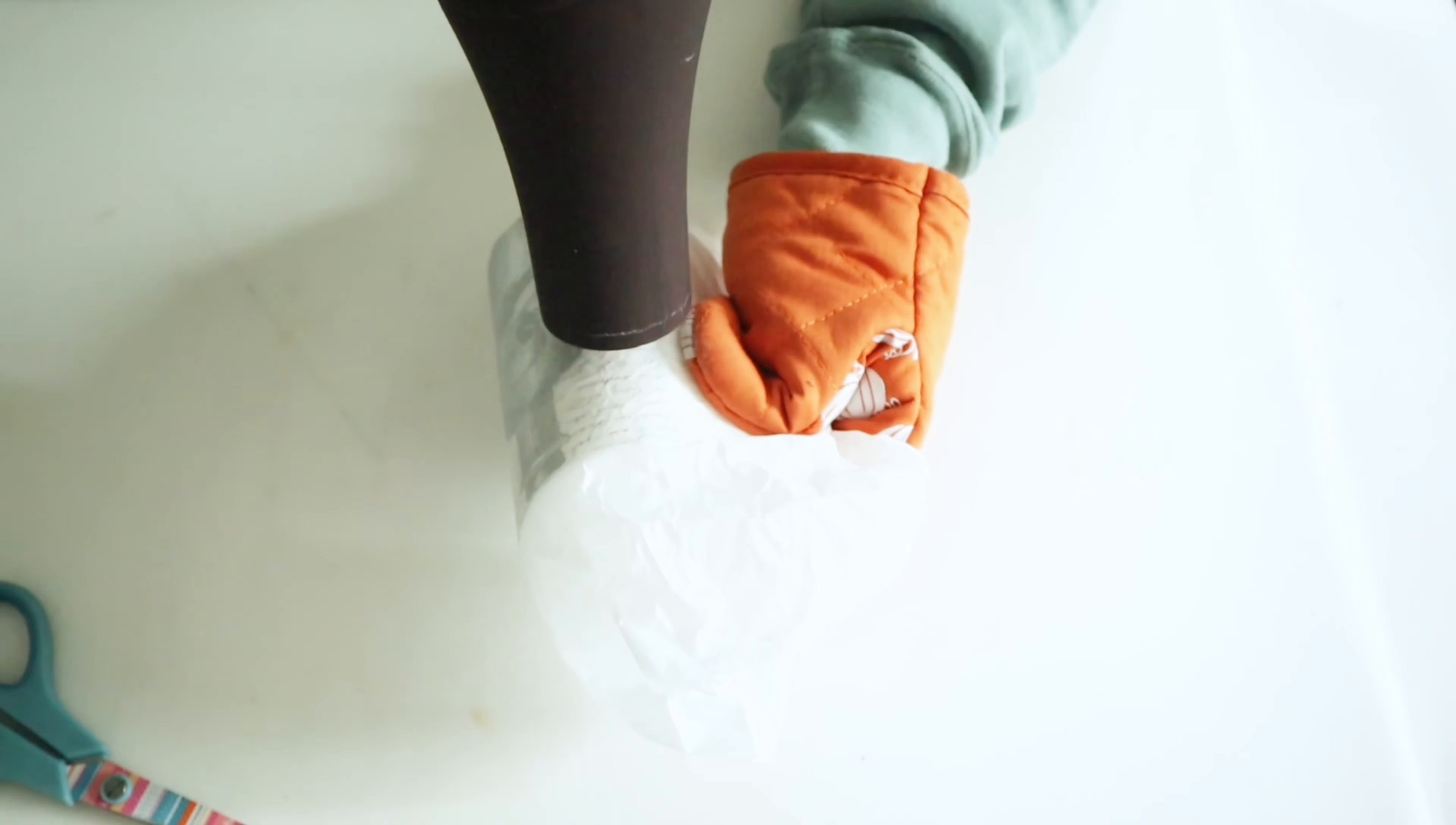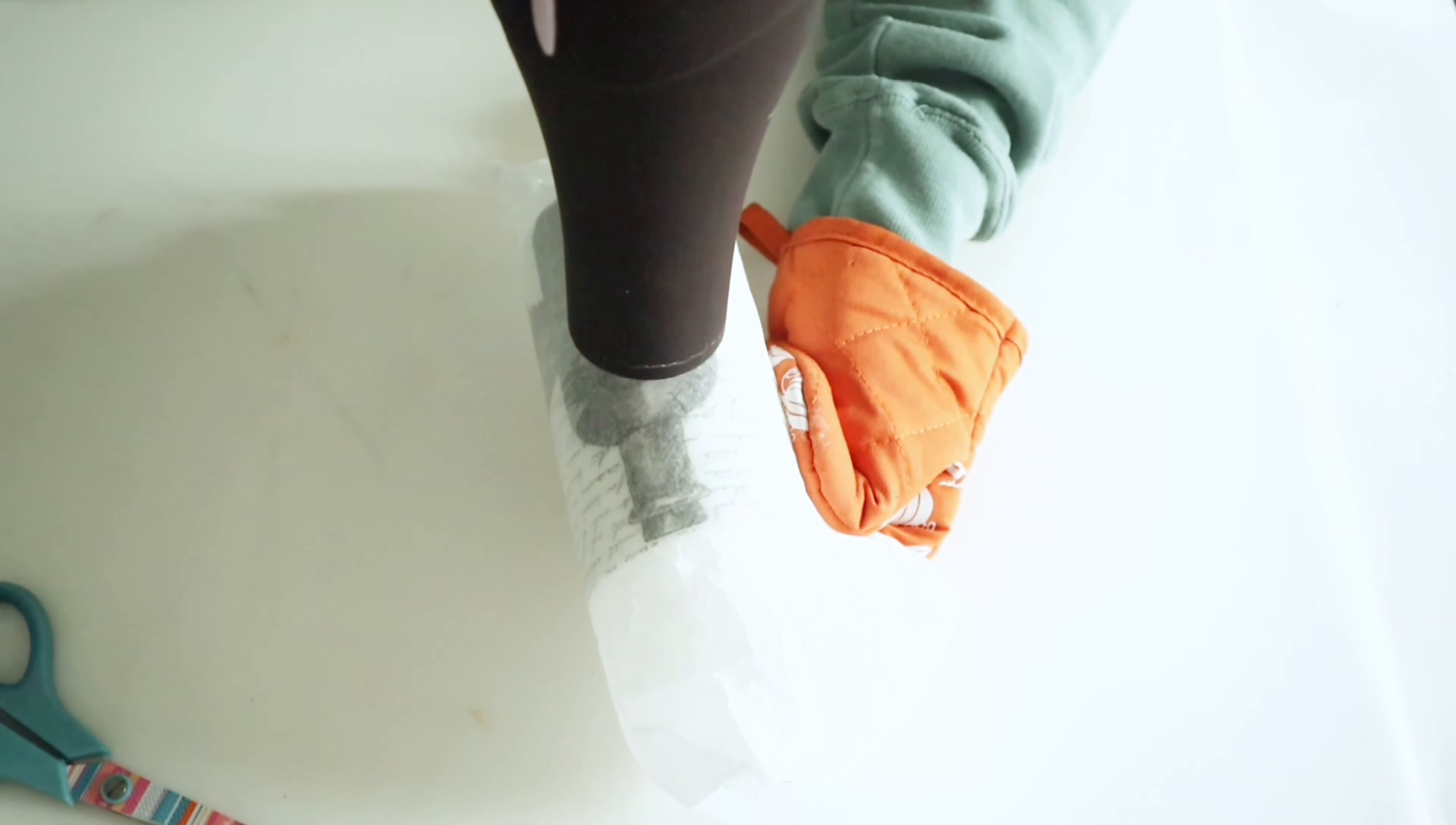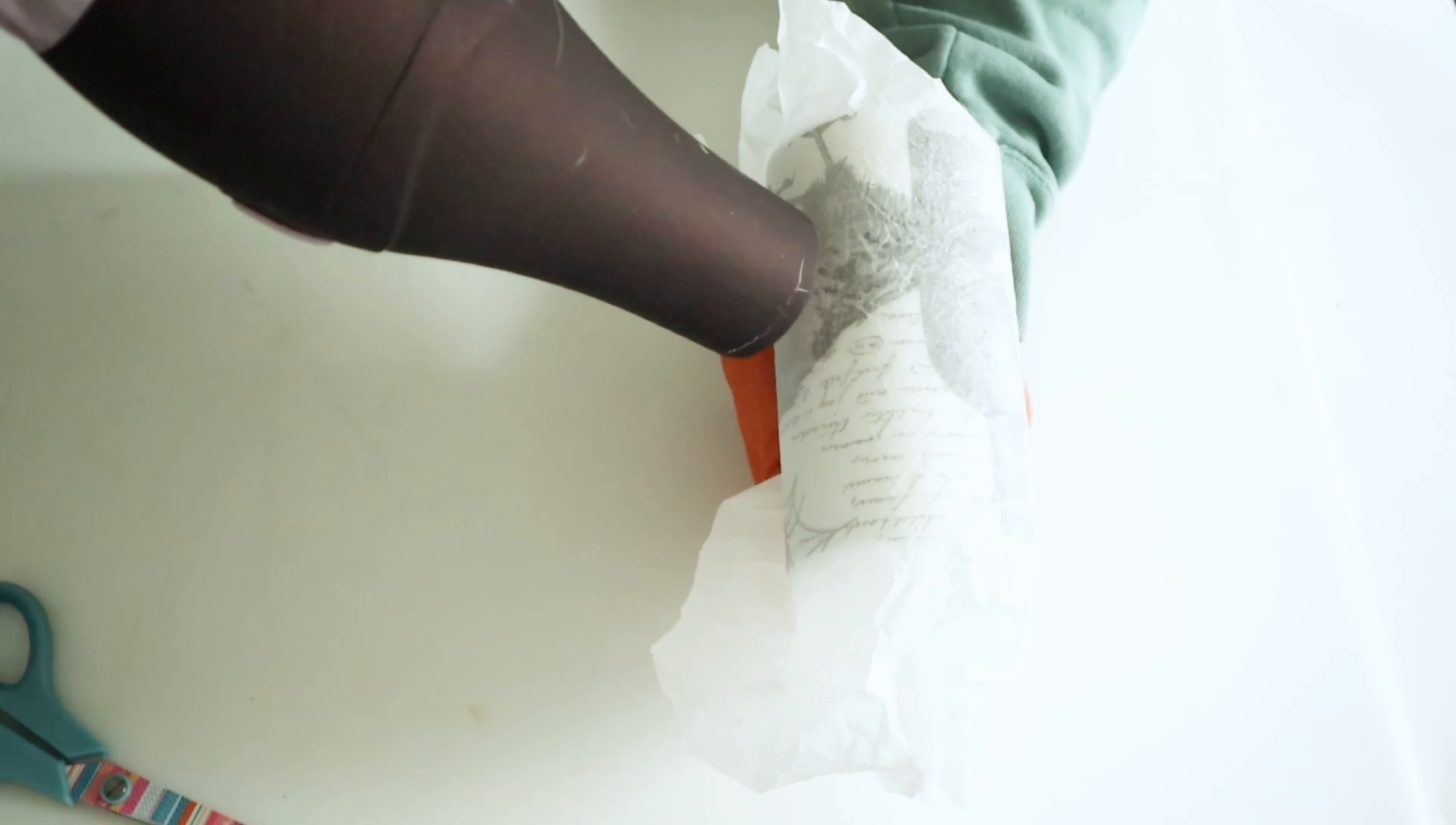You're going to take your blow dryer on a high heat setting and just go over this. And as you are doing this, after a few seconds, you will notice that the image is getting darker through your wax paper. Or you could also use parchment paper as well for this, but you'll still be able to see the image getting darker through that paper and that's how you know when it is ready.